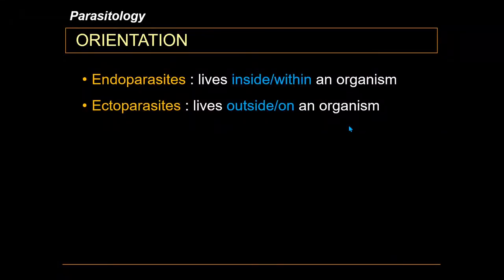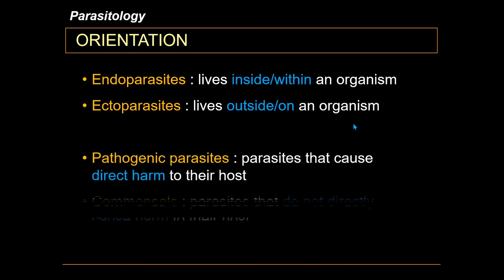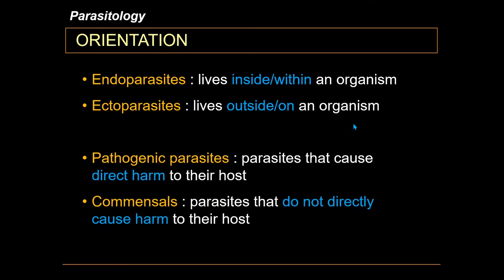Endoparasites are parasites which live inside an organism, while ectoparasites are parasites which live outside or on the surface of the host organism. Pathogenic parasites are parasites that cause direct harm to their host, while commensals are parasites that do not directly cause harm to their host. Please take note of the term 'directly' — some commensals may cause indirect harm to their host.